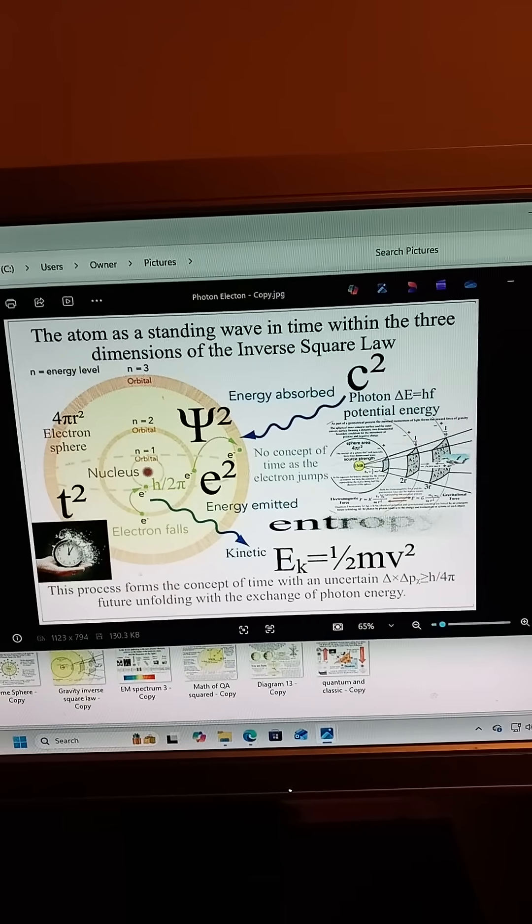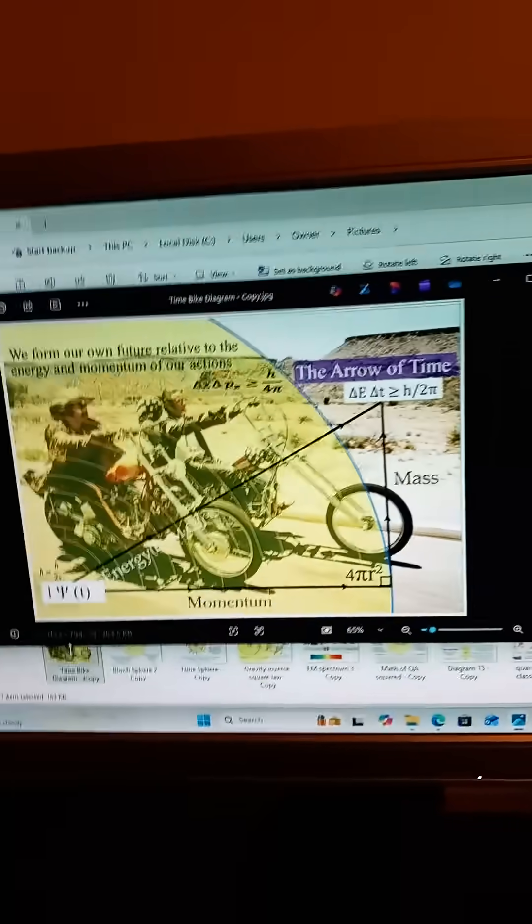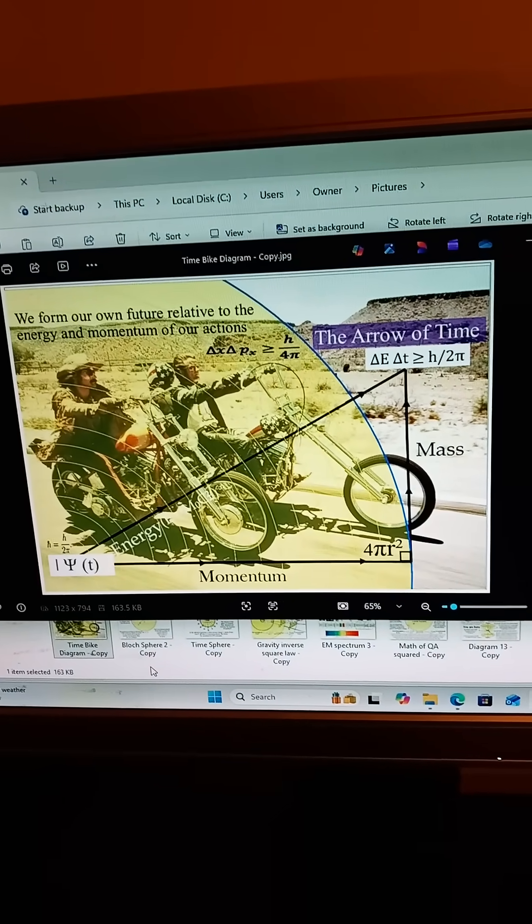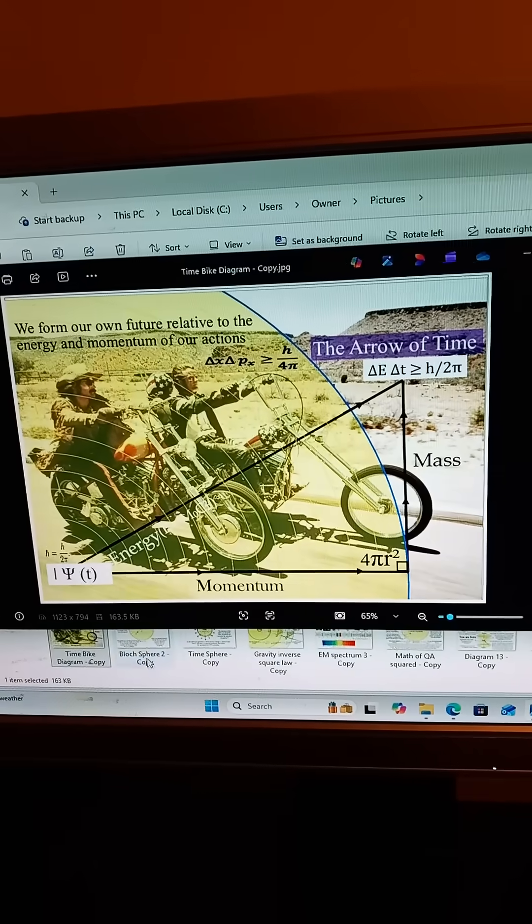Between every cause and every effect, there is a photon-electron coupling. This coupling forms a tiny sphere of possibility. In quantum physics, this sphere is called a Bloch sphere.